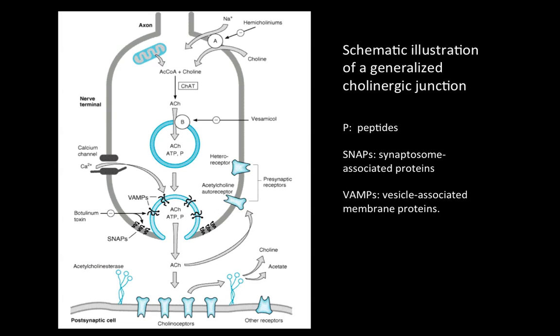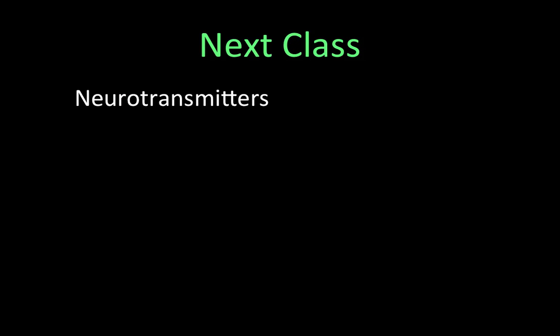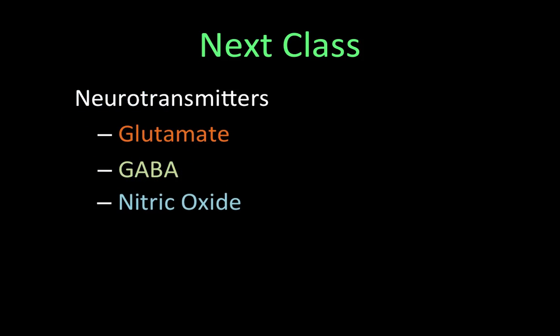For further reading, look up the mechanism of action of curare and physostigmine — it may come up in a test soon. In the next class, we're going to be looking at neurotransmitters, specifically glutamate, GABA, and nitric oxide.